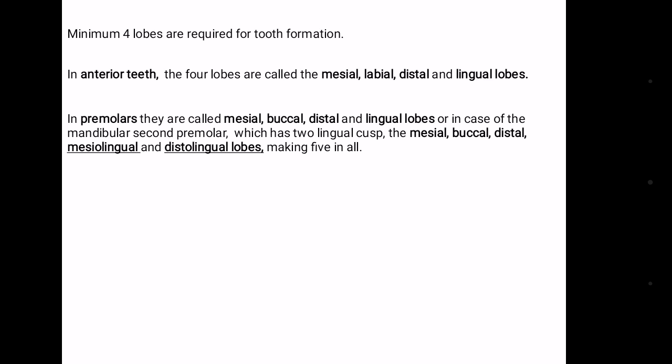So in total, the mandibular second premolar has 5 lobes: mesial, buccal, distal, mesolingual, and distolingual lobes.